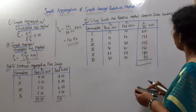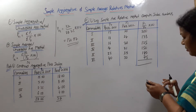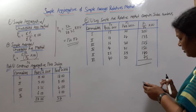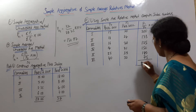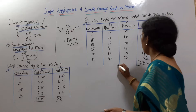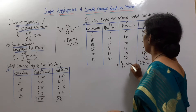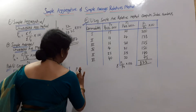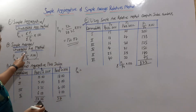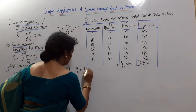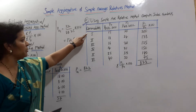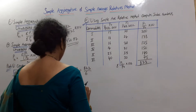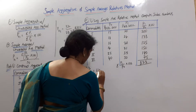The total of sigma P1 by P0 into 100 is: 200 plus 133 plus 125 plus 150 plus 140 plus 75 equals 823. The formula is P01 equals sigma (P1 by P0 into 100) divided by N. N is the number of observations, which is 6. So 823 divided by 6 equals 137.16. This is the answer.